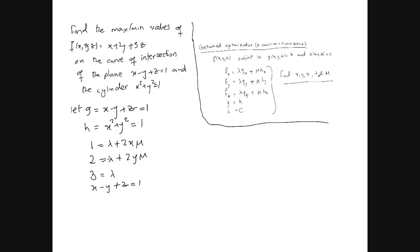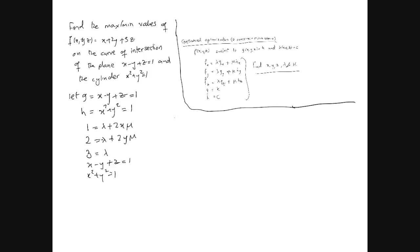Plus we have our equations: x minus y plus z equals 1, and x squared plus y squared equals 1. Now we're ready to solve this problem. Using lambda equals 3 from here, let me mark these equations. If I substitute lambda equals 3 into our first equation, equation 1, we're going to have 2x mu equals minus 2, which tells us that x equals minus 1 over mu.